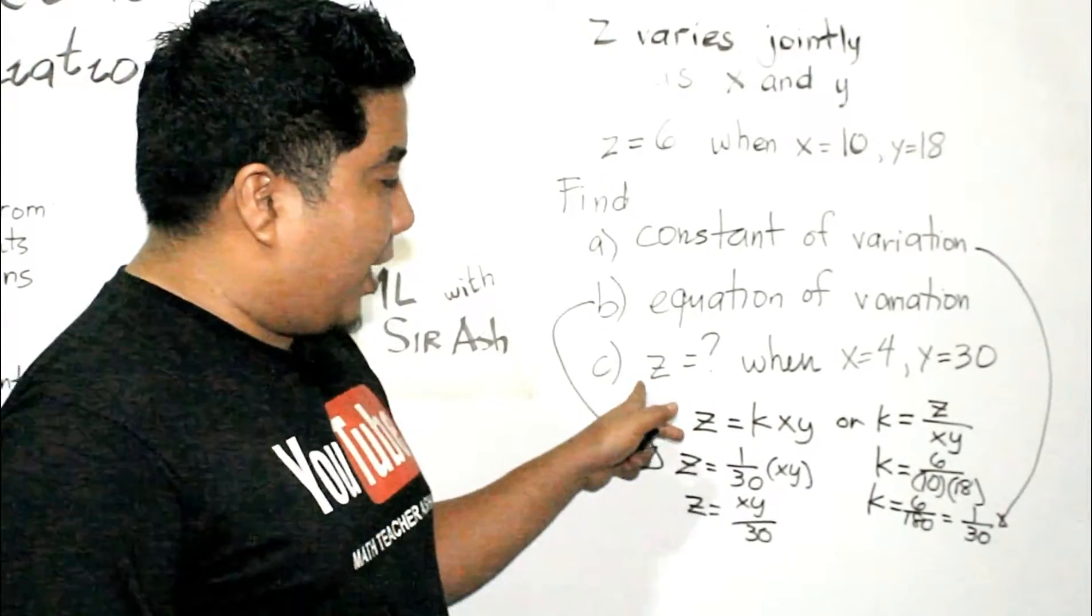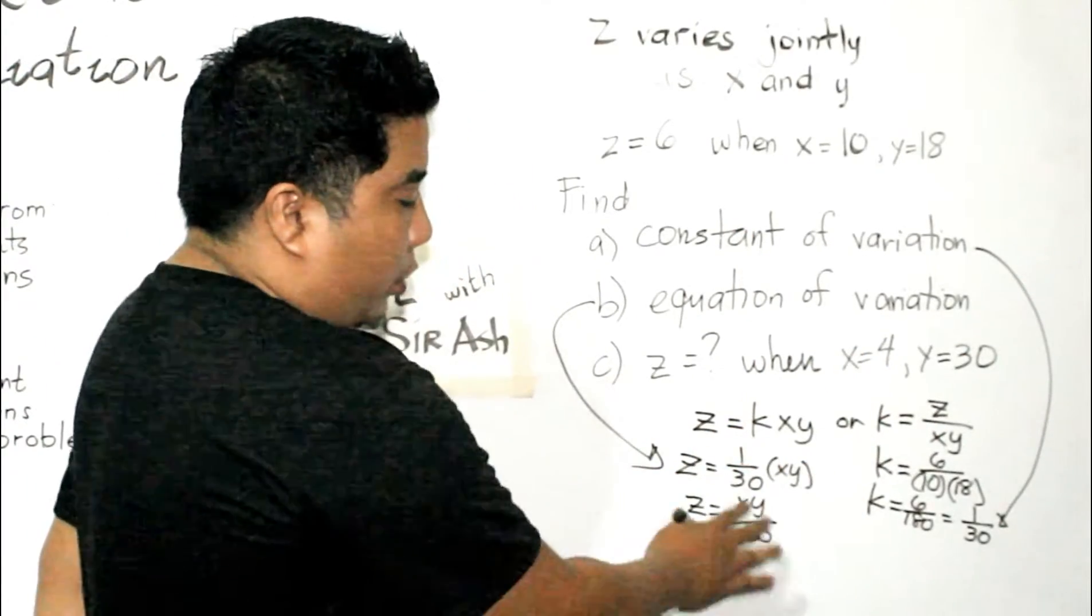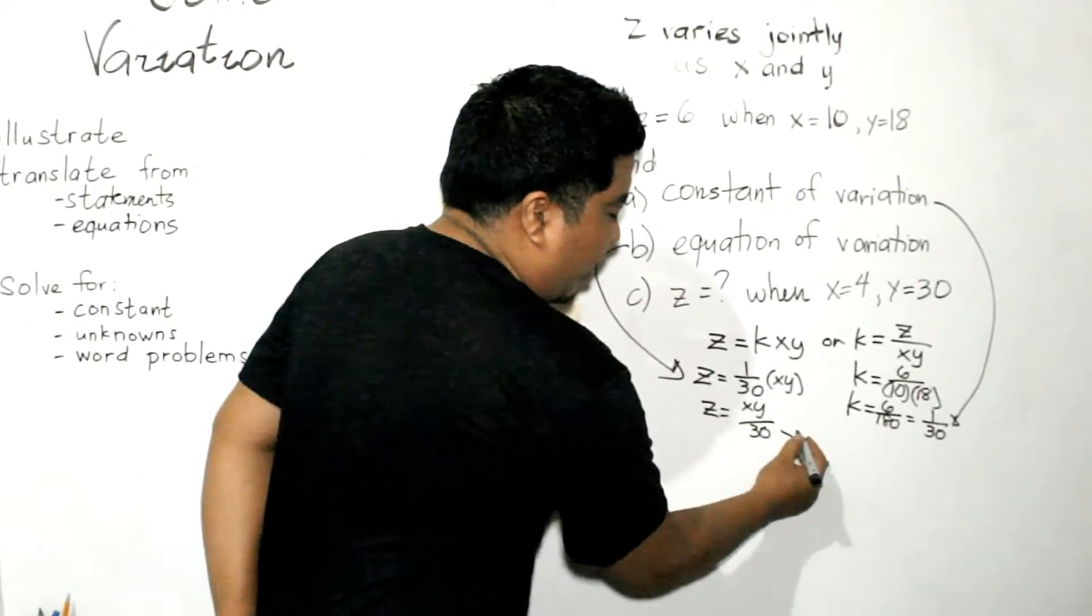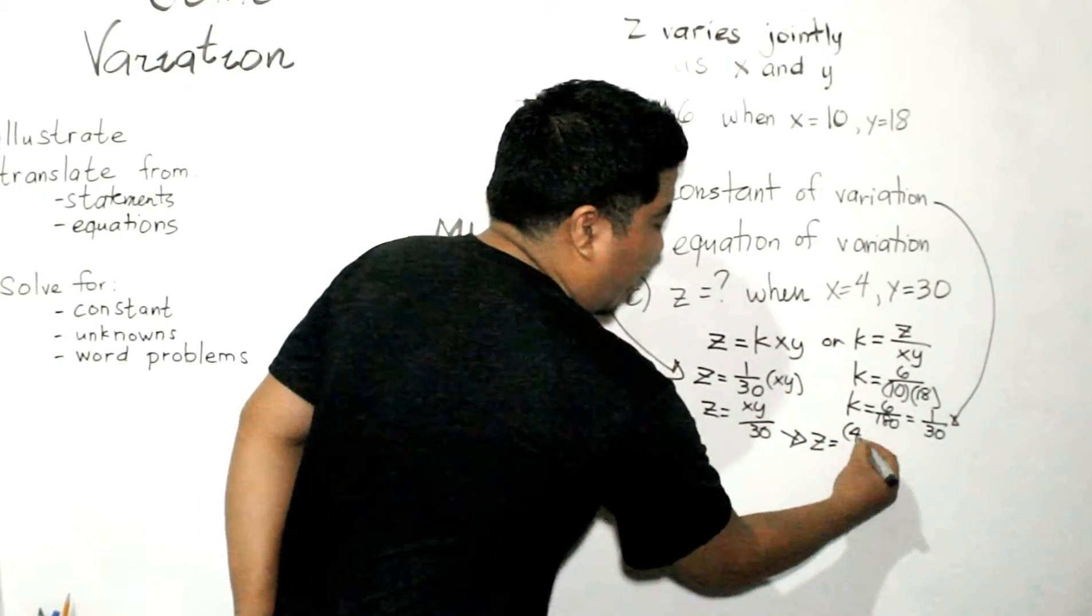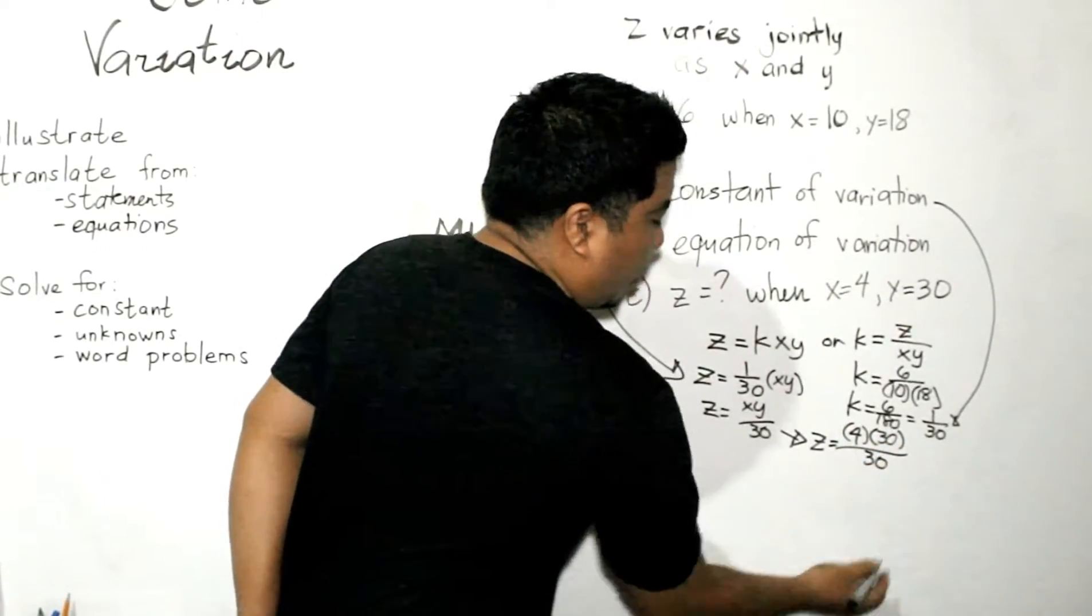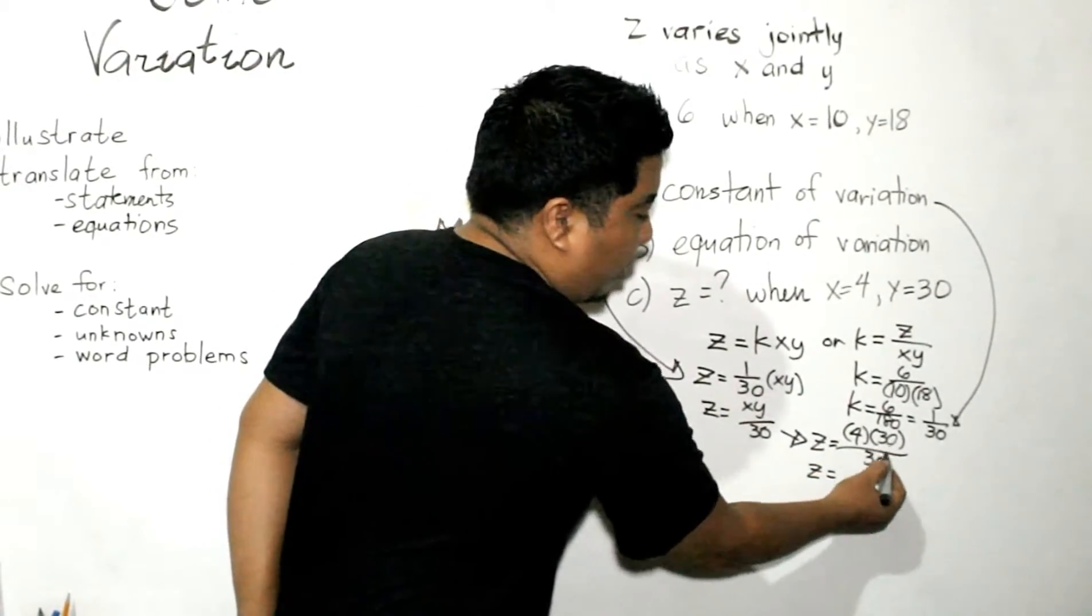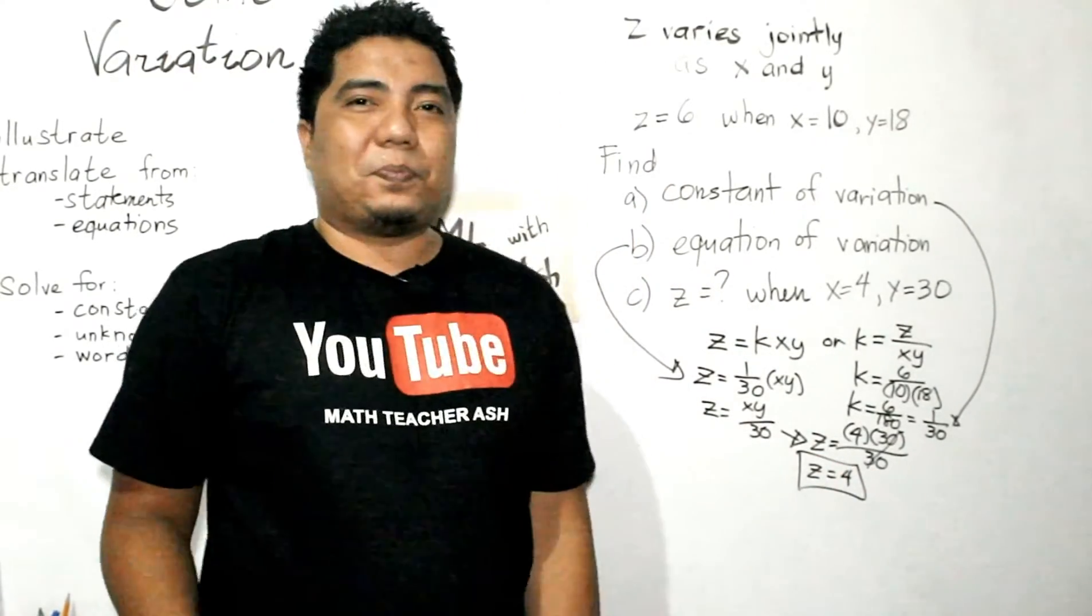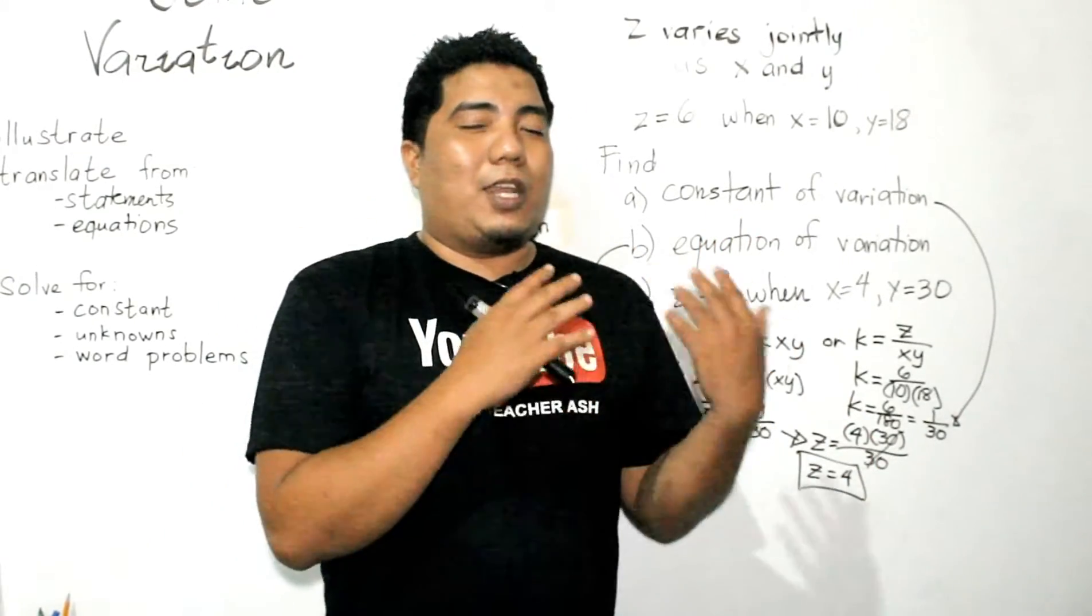Now, let us solve for our final question, what is z when x is equal to 4 and your y is equal to 30? So, what you need to do here is to substitute it. This will become 4 and this will become 30. So, basically, that is z is equal to, x will be 4 and your y will be 30. Then, you divide it by 30 which is part of your equation. So, basically, 30 and 30 you can cancel it and your final answer is 4. Easy, right? So, your final answer is z equals 4 and we have answered the three questions in our problem.